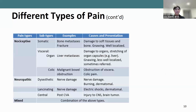Nociceptive pain can be somatic, visceral, or colicky. Somatic nociceptive pain could be related to bone metastases or a fracture. Visceral pain would be those organ-type experiences, maybe related to liver metastases. Colicky pain is crampy in nature, maybe related to malignant bowel obstruction. Neuropathic pain can be related to nerve damage or post-stroke — central neuropathic pain. And of course there are mixed-type pains, where a patient experiences both nociceptive and neuropathic pain.